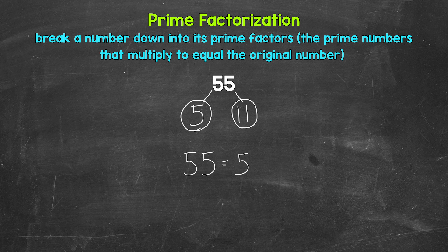So we have 5 times 11. If we have the correct prime numbers, they will multiply to equal our original number. 5 times 11 is 55, so we are correct here.